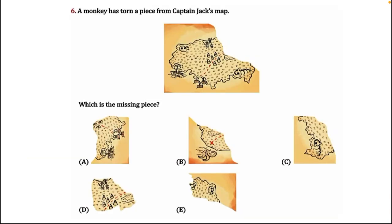Question number 6: A monkey has torn a piece from Captain Jack's map. The map is given below and its top right corner is torn out. Which is the missing piece? Options are given below. Now we have to find the correct piece.